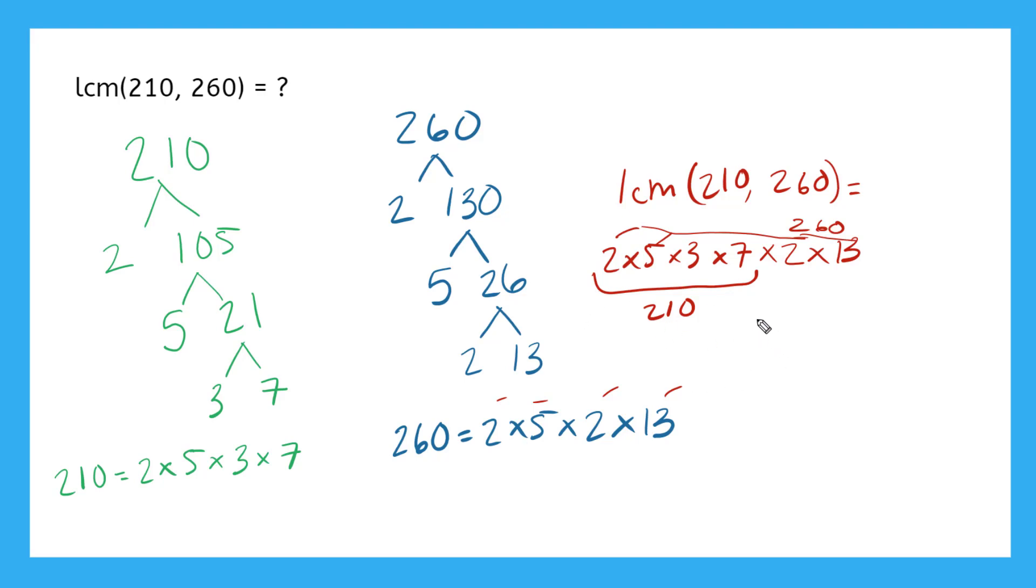So now if I multiply all of these together—you can go ahead and use your calculator, that is fine—2 times 5 times 3 times 7 times 2 times 13 gives us 5,460. So can you imagine if we listed out all of our multiples, if we skip counted by 210 and 260 all the way to 5,460? That would have taken us all day.